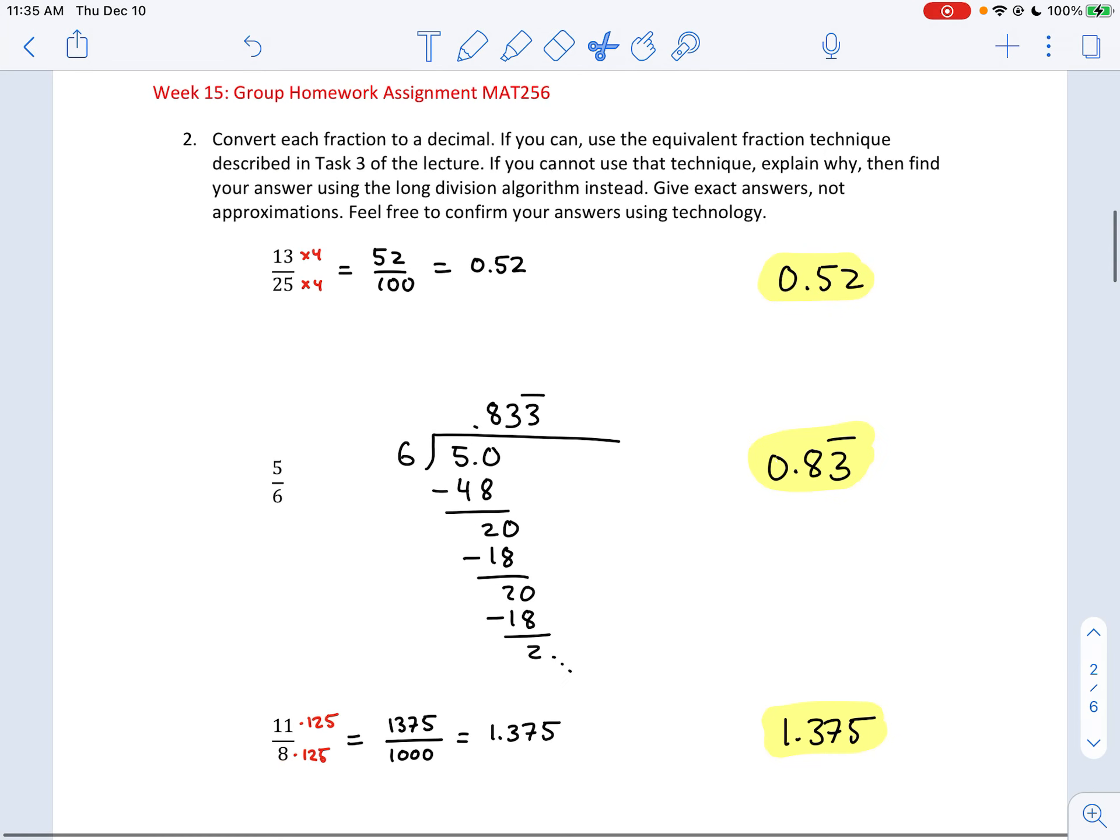Number 2. Again, same issues here when people not putting times 4 in both places. Certainly you can scale 25 to 100, so this was an easy approach to get 0.52.